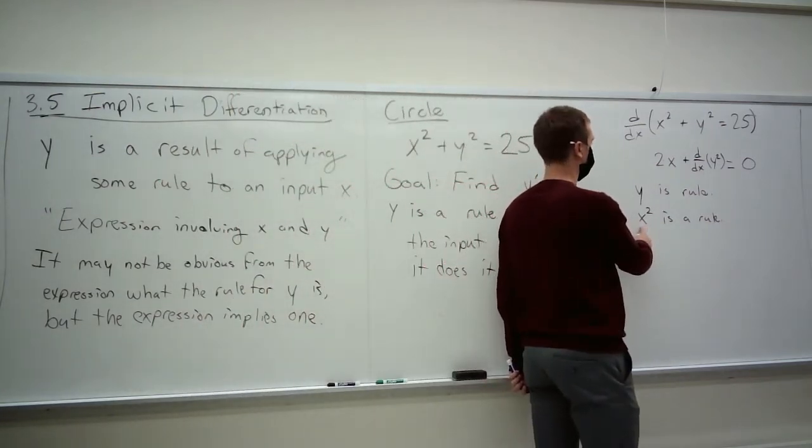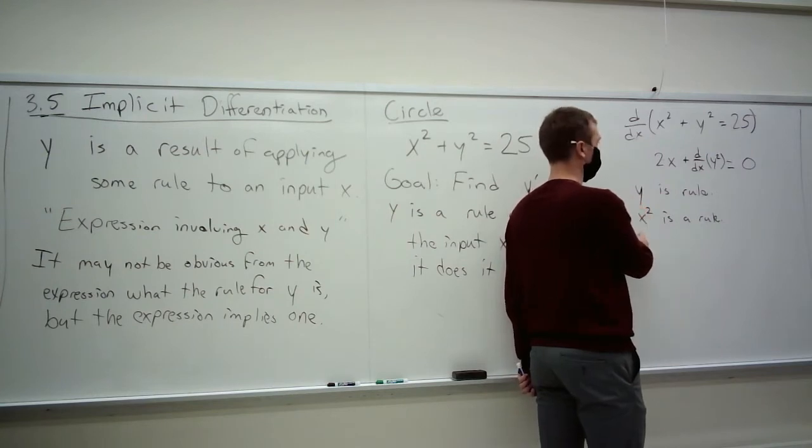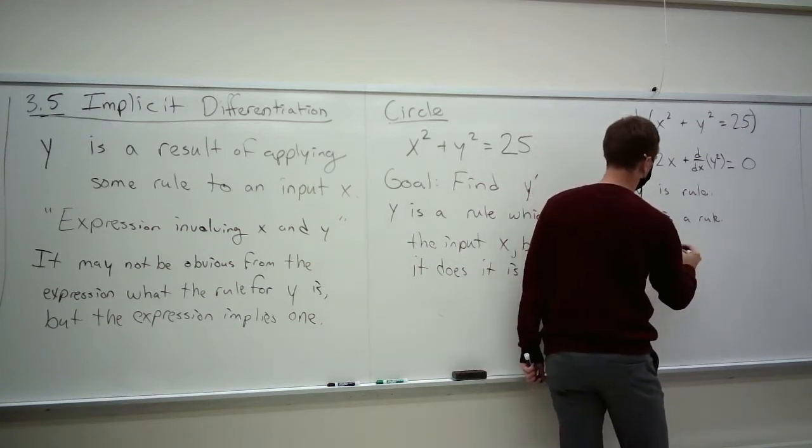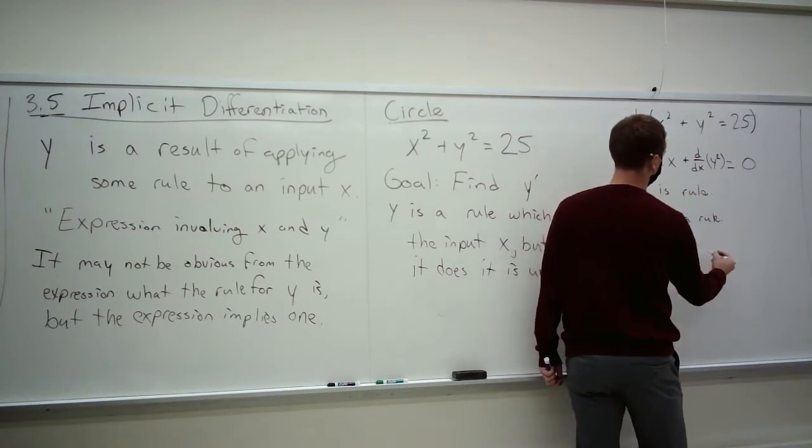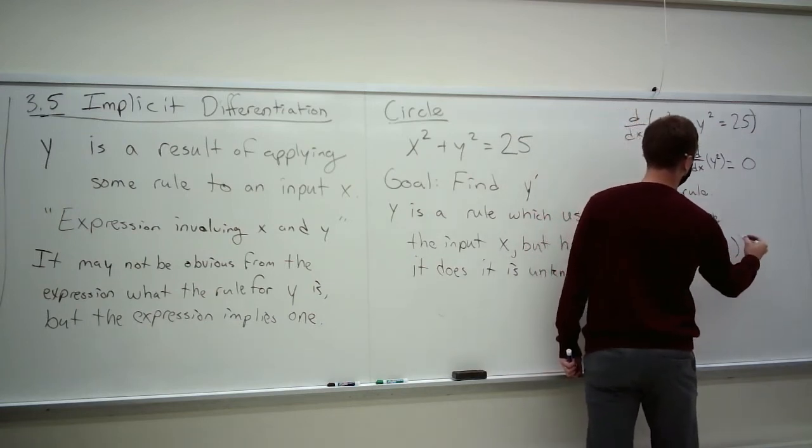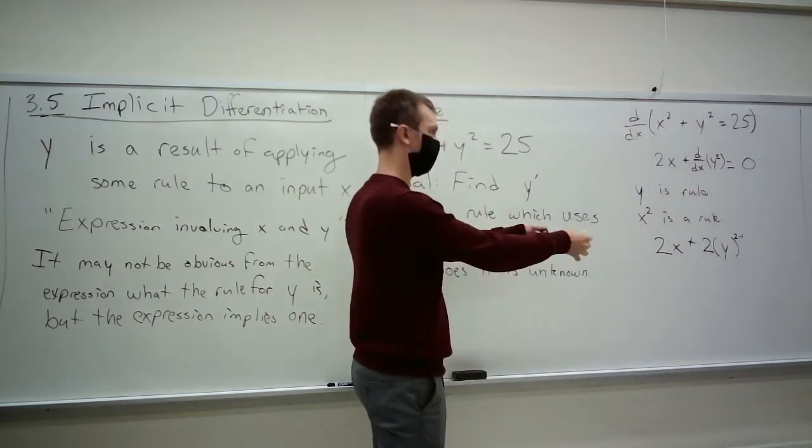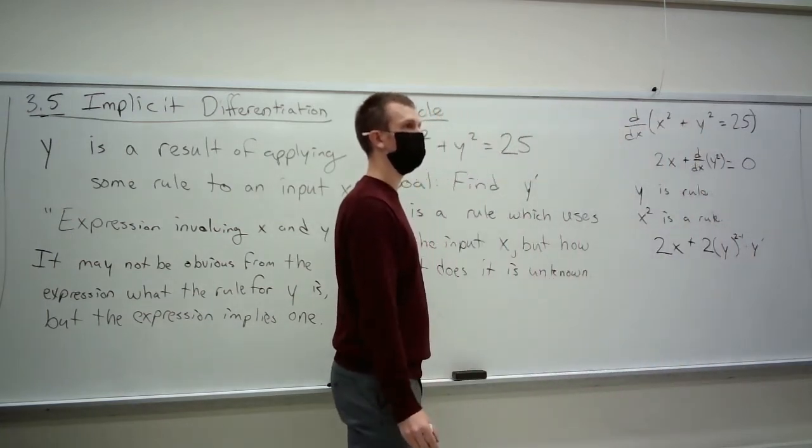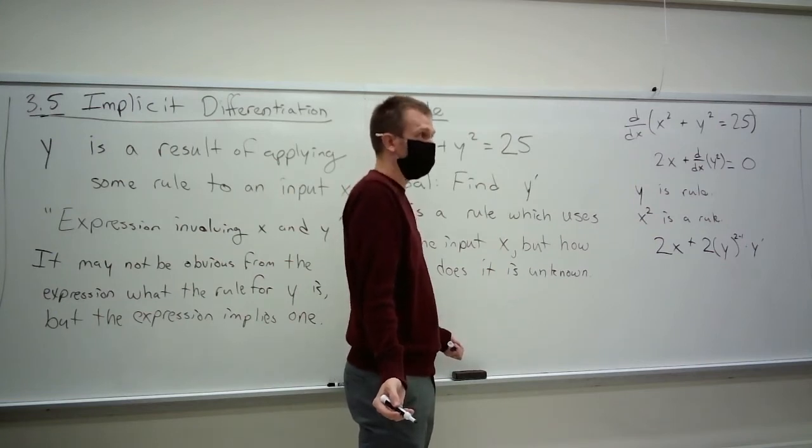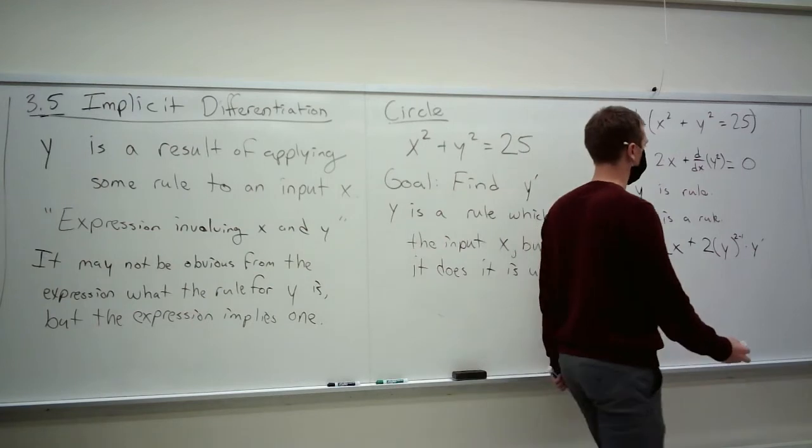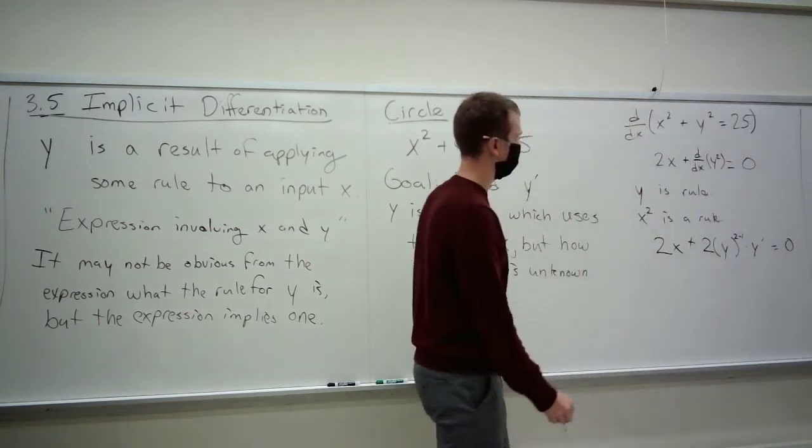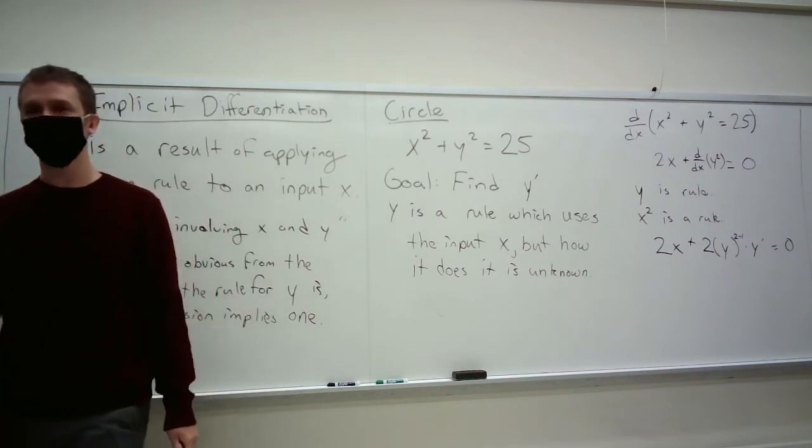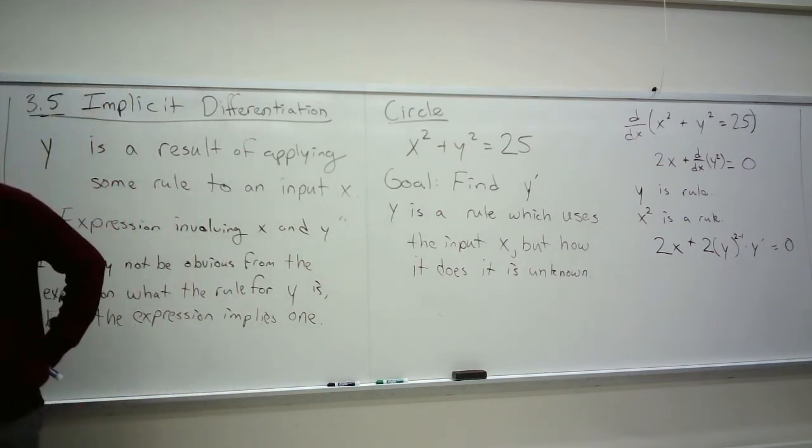The chain rule says that we take the derivative of the outside function, 2x. We compose it with the original function, so it becomes 2y. And then we multiply by the derivative of the inner function, y prime. So this turns into 2x plus 2 times y to the 2 minus 1. That's the derivative of the outer function, times the derivative of the inner function, which we don't know, because we don't know the rule. Is it still 0? Do you have a question?